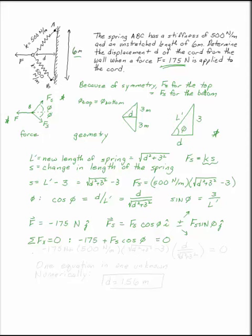If we substitute what we know into that, we have negative 175 plus our magnitude Fs, 500 newtons per meter, times the square root of d squared plus 3 squared minus 3, that was our change in length of the spring, times cosine phi, which we just found as d over the square root of d squared plus 3 squared. This is equal to zero.